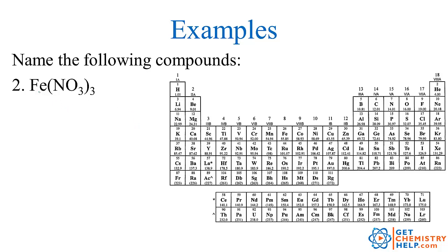How about Fe(NO3)3? Fe is iron, which is not in group 1, not in group 2, and not in the magic triangle, so its charge is going to vary. The anion is NO3, which is nitrate — and nitrate has a charge of 1−. But we have three of them, so that's a total of 3−. The positive total must be 3+ to balance out. There's only one iron, so it must be iron(III) nitrate.